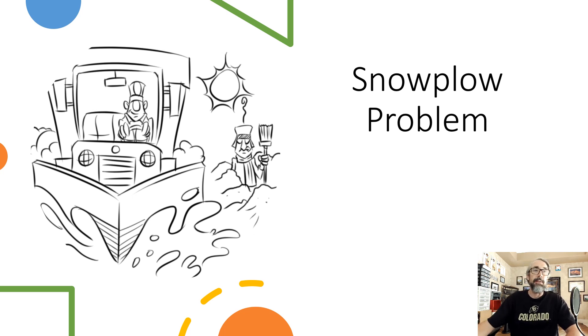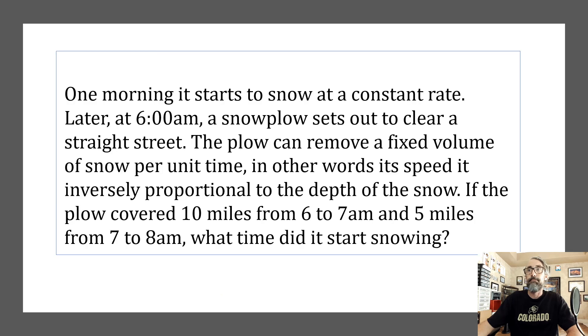With the apologies out of the way, let's ask the problem. One morning it starts to snow at a constant rate. Later, at 6 a.m., a snowplow sets out to clear a straight street. The plow can remove a fixed volume of snow per unit time. In other words, its speed is inversely proportional to the depth of the snow. If the plow covered 10 miles from 6 a.m. to 7 a.m. and 5 miles from 7 a.m. to 8 a.m., what time did it start snowing?